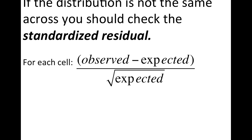The standardized residual is observed minus expected, divided by the square root of expected. Since we're not squaring this, we are going to get some positive and some negative values. The positive and negative values tell us a little bit more about the difference — which one is higher, the observed or the expected.